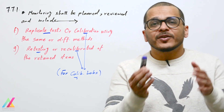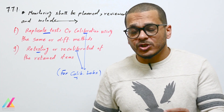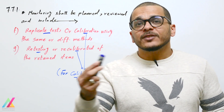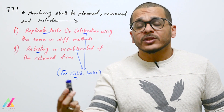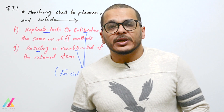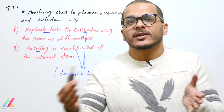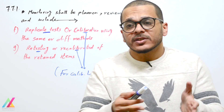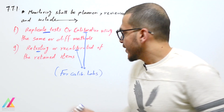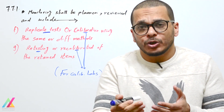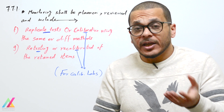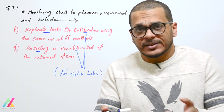Replicate testing and calibration using the same or different methods are also QC activities. Replicate tests of samples spiked with a known concentration of target analytes, using the same analyst, same method, same instrument, and short time scale, give repeatability. Using different analysts, different methods, different instruments, and long time scale gives reproducibility. Retesting of retained items means re-analyzing a stored sample after some time and obtaining a result close to the original — demonstrating method consistency.